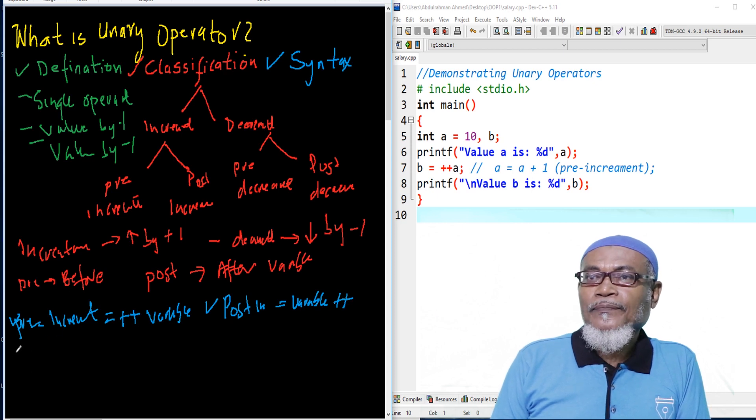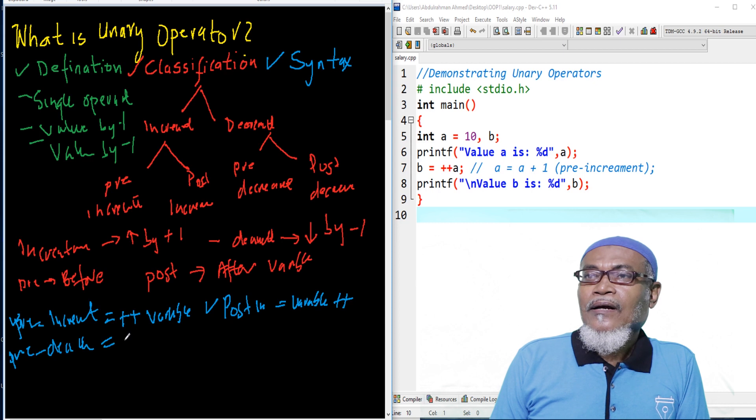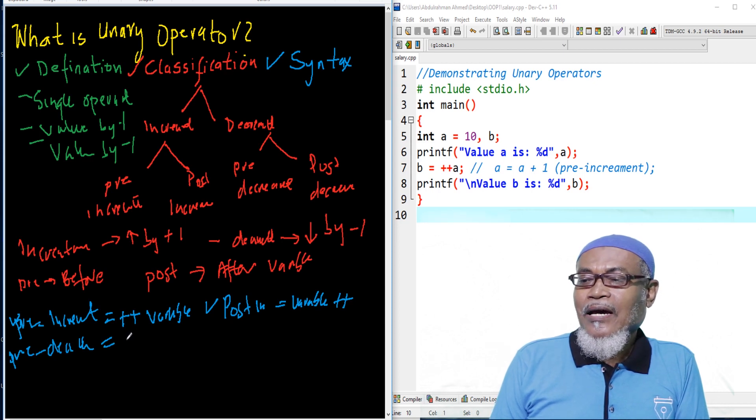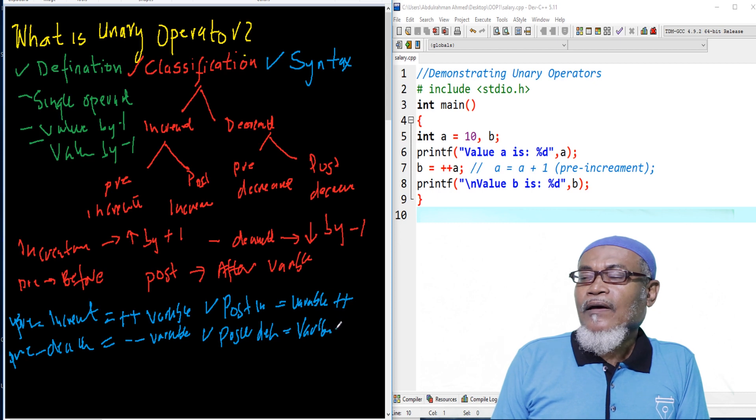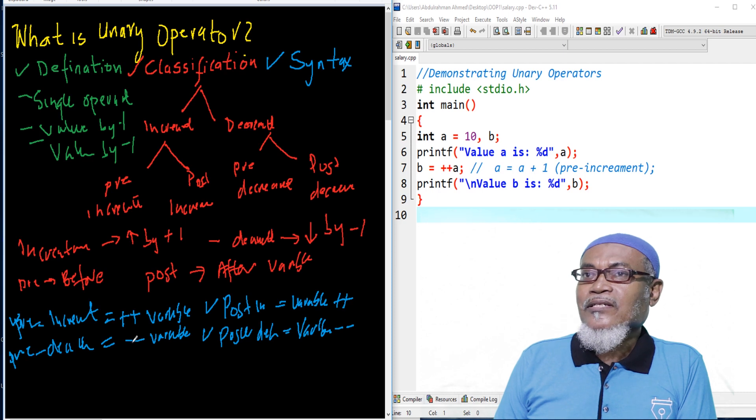And then, when we come to the pre-decrement, it will be, we have to start pre, it is actually before, so we'll have the decrement, and then we have our variable. And here, when we are talking about post-decrement, it will be actually the variable name, and then the decrement part of it. So basically, this is the syntax of how unary operator works.